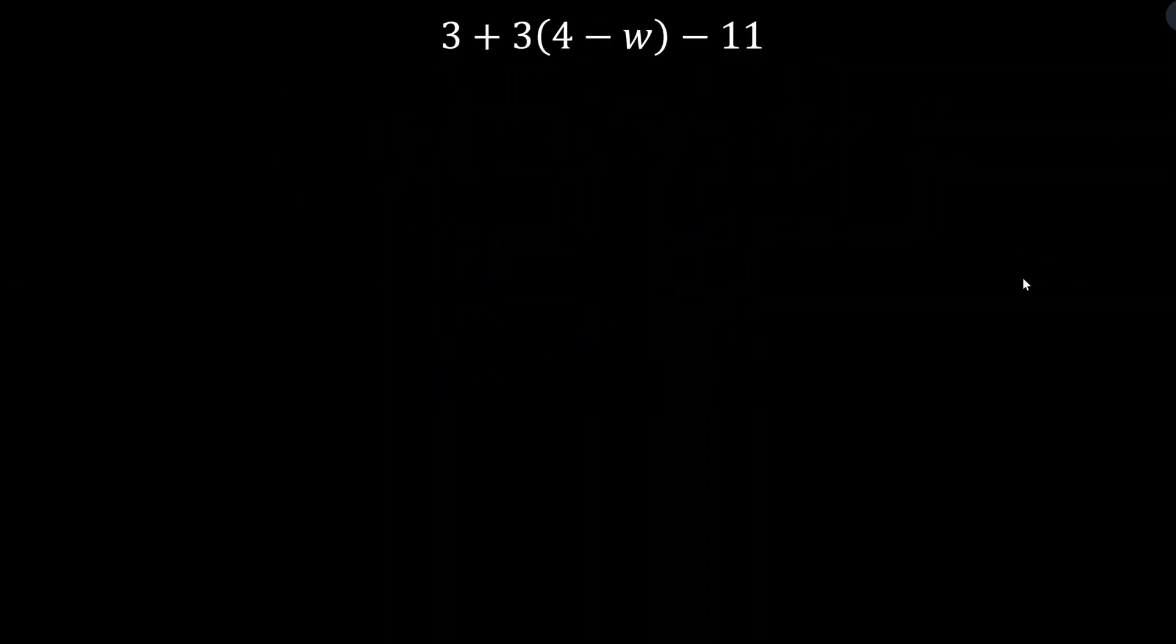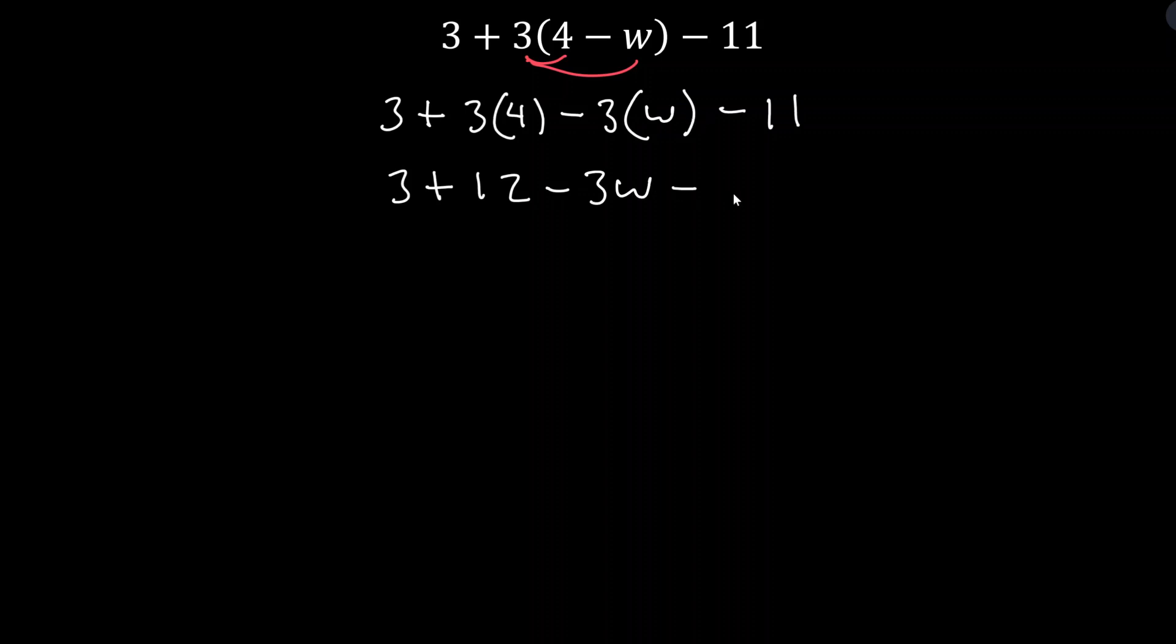Let's try the next example. Here we have 3 plus 3 in parentheses 4 minus w minus 11. So now we have this parentheses here with a number being multiplied outside. So now is where we're going to apply the distributive property. 3 times 4 and 3 times negative w. So let's go and apply that first. 3 plus 3 times 4, and then we have minus 3 times w minus 11. And now you could very well do this in one step. You could have just gone straight from the initial expression to 3 plus 12 minus 3w minus 11.